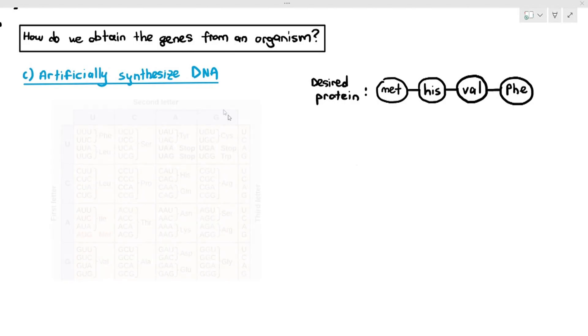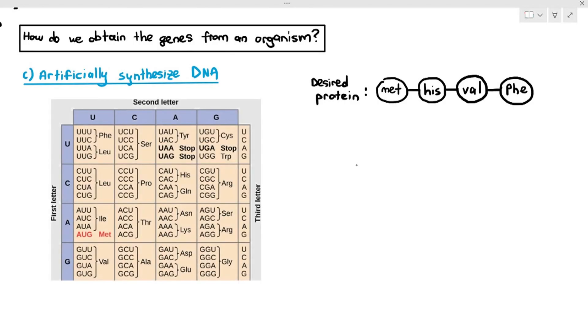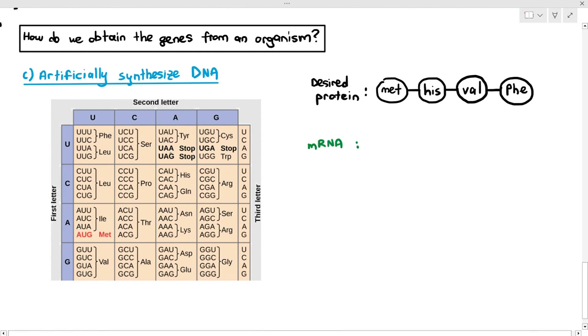Using the mRNA table, we know that the specific mRNAs we need are, for methionine, AUG. For histidine, I can use a few, like two sequences, but I'm just going to use CAU, which I've highlighted in the table. For valine, I can use a total of four codons, but I'm just going to use one codon, GUU. And for phenylalanine, it's just UUU or UUC, but I'm just using one of that sequence, UUU.